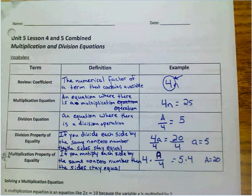The division property of equality is that if you divide each side by the same non-zero number, then the sides stay equal. So, 4a equals 20. Divide both sides by 4 and we get a is 5.